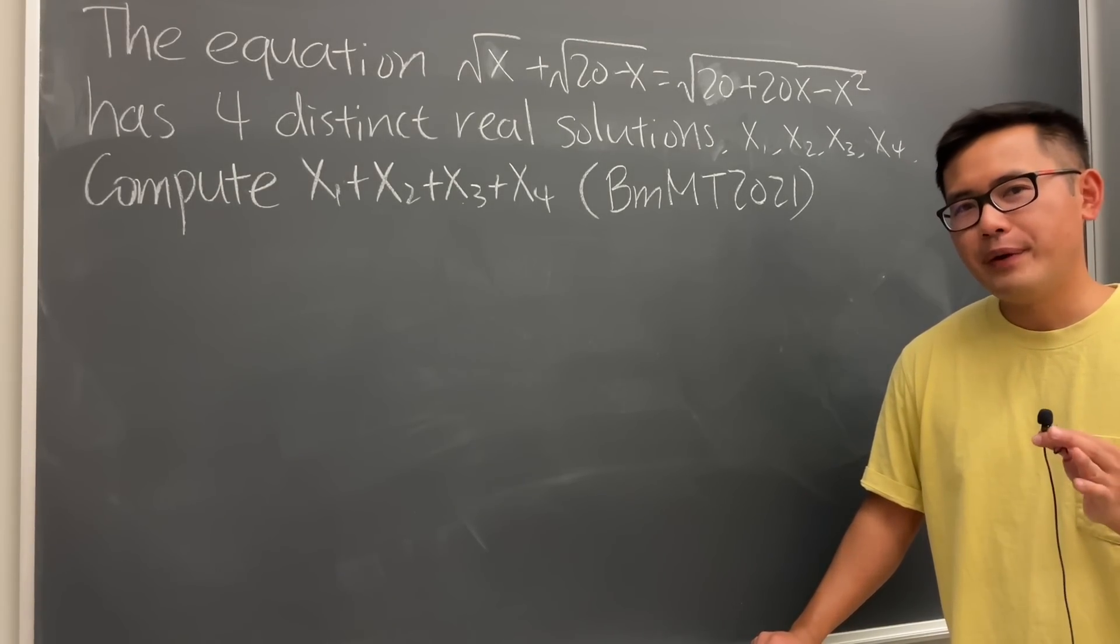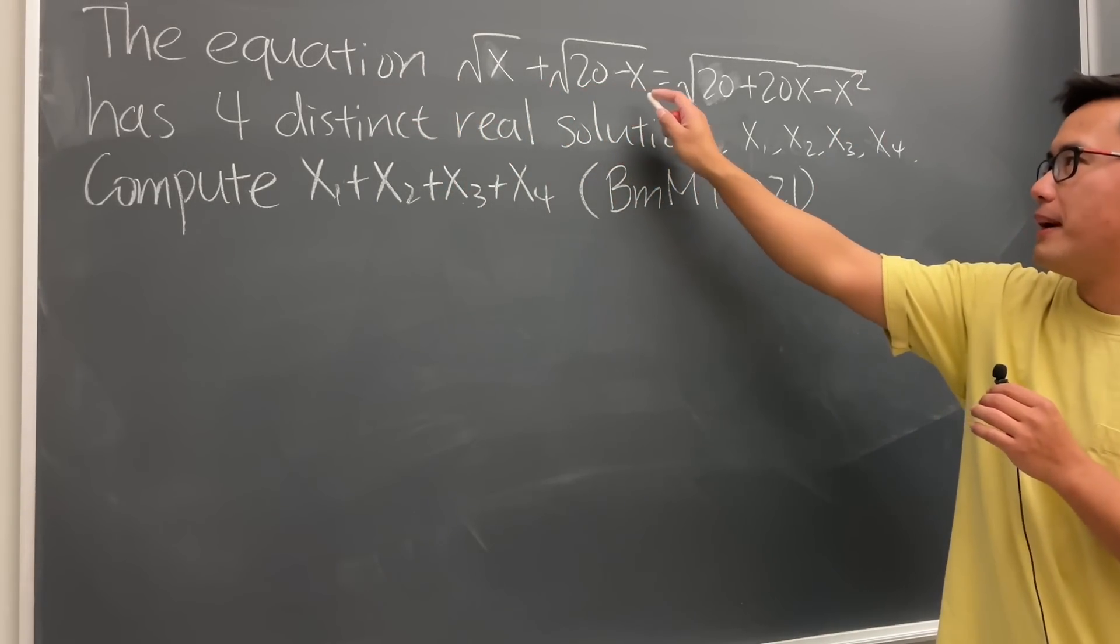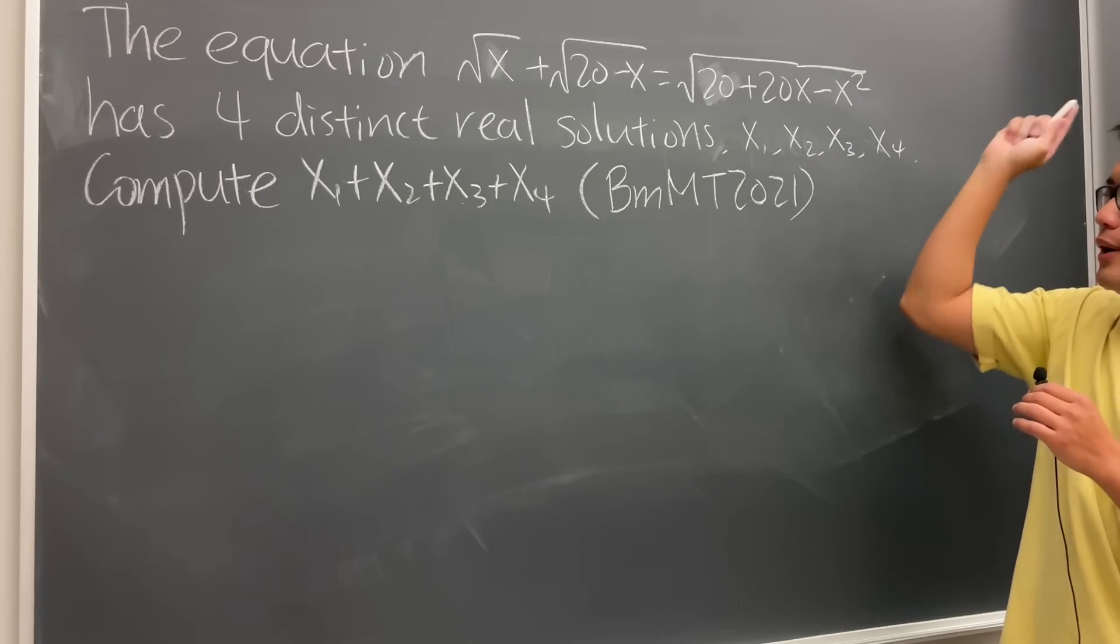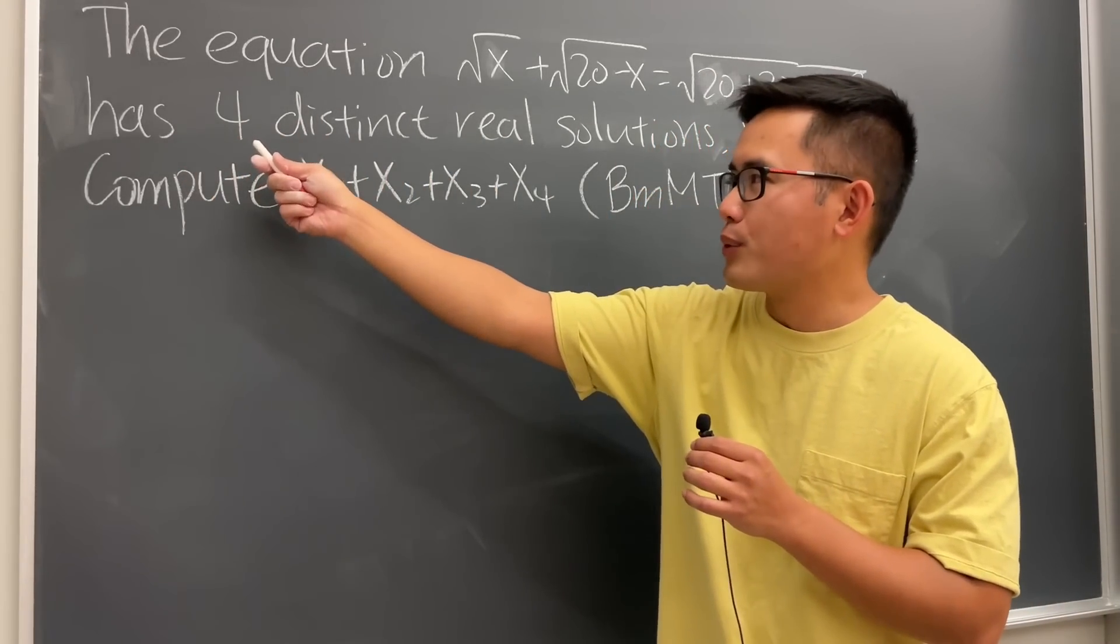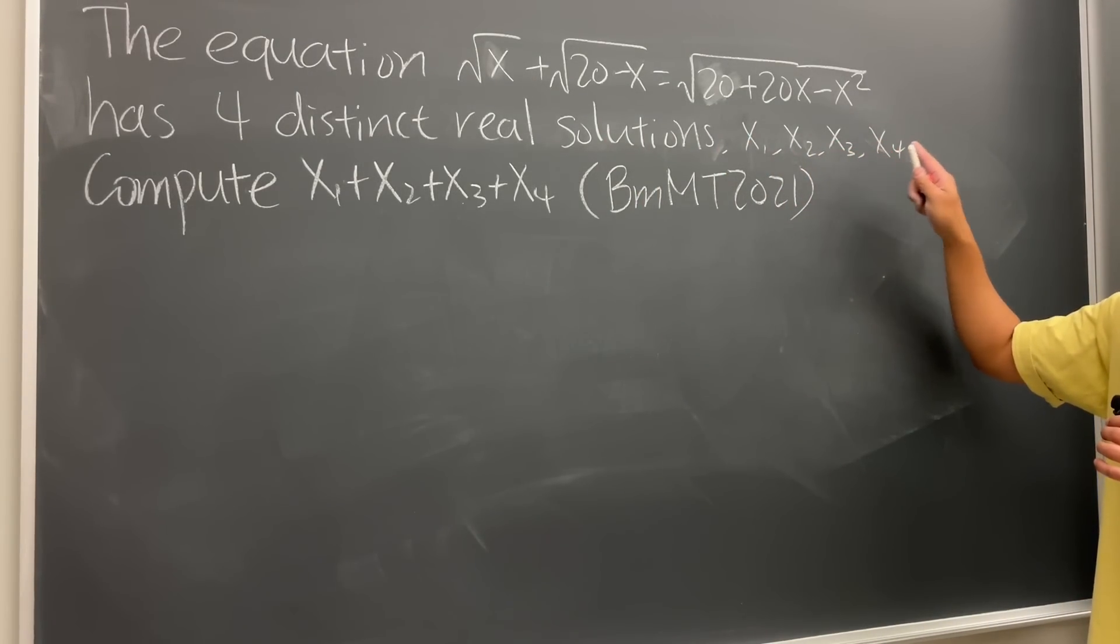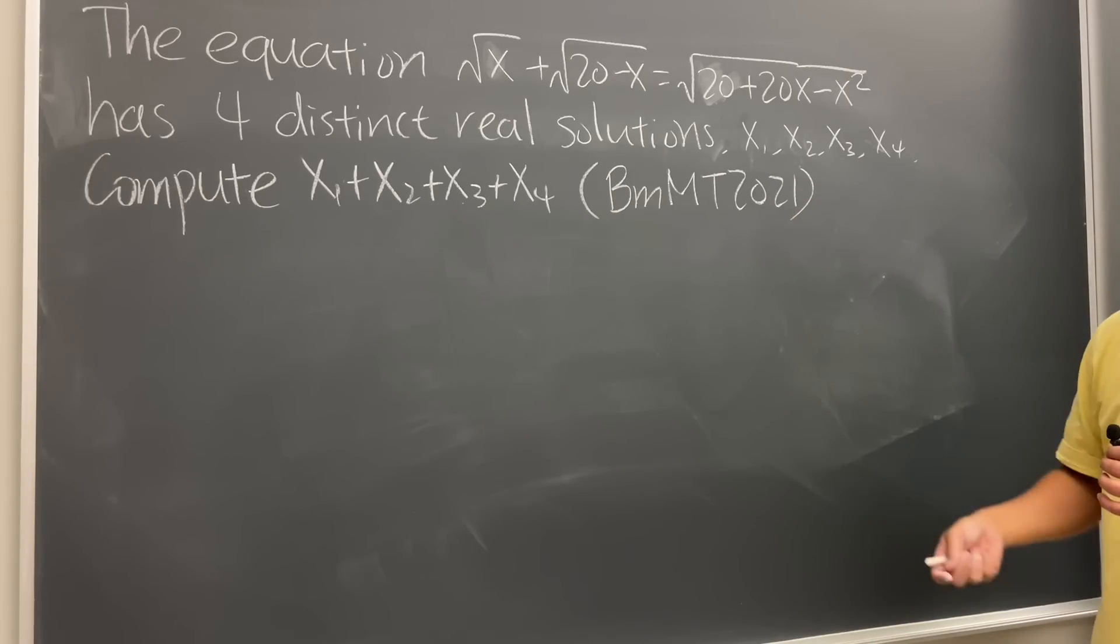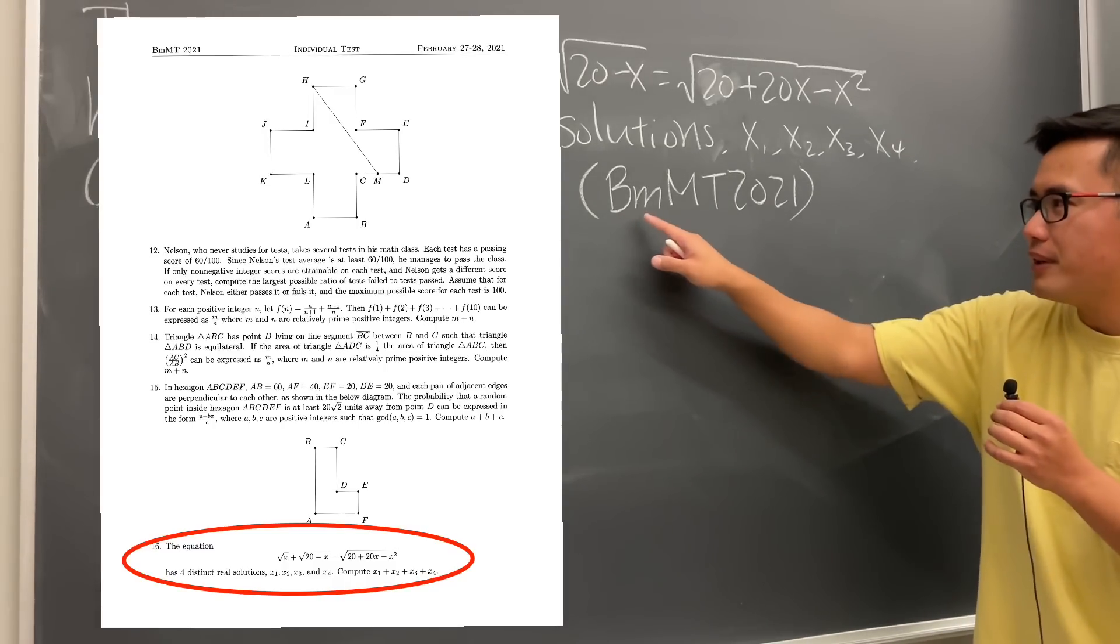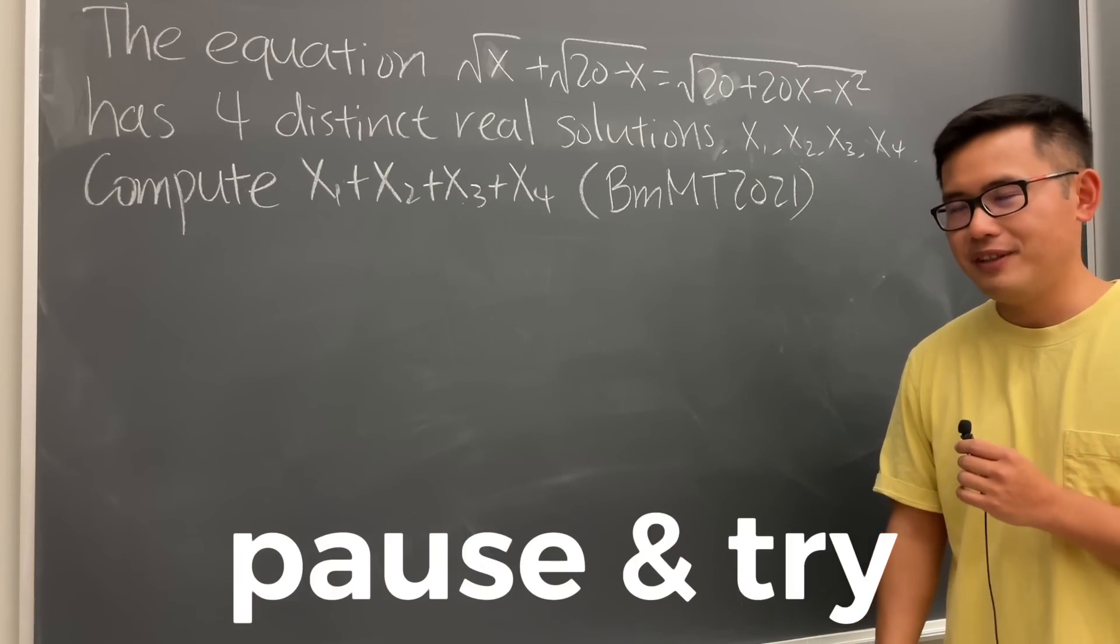Okay, let's do some math for fun, and here I have a very interesting question for you guys. Given that the equation square root of x plus square root of 20 minus x equals square root of 20 plus 20x minus x squared. So this radical equation has three square roots, but it has a total of four distinct real solutions, and we're going to call them x1, x2, x3, x4. We can assume that x1 is the smallest, x2 is the next smallest, and so on. Our goal is to compute their sum. This question is from the Berkeley Mini Math Tournament in the year 2021, and you know the deal. Please pause the video and try this first.